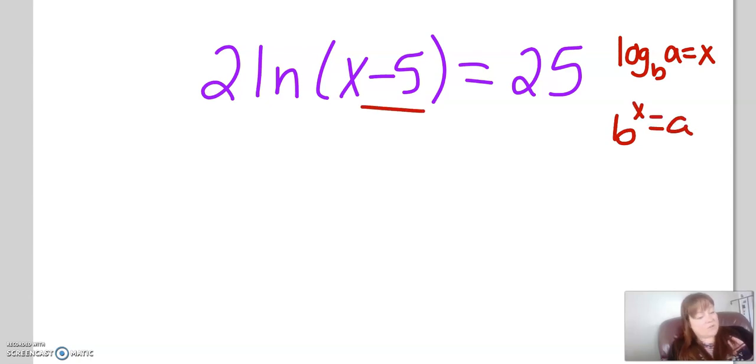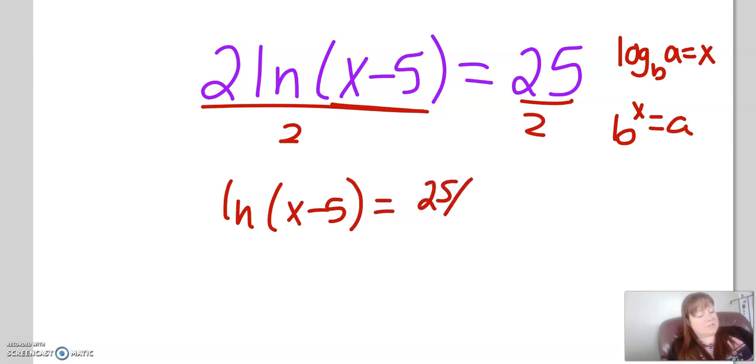And what are we trying to solve for? Well, we're trying to solve for the argument. We want the argument by itself, so we're going to divide both sides by 2. We have ln of x minus 5 equals 25 divided by 2. We'll just leave that as a fraction.